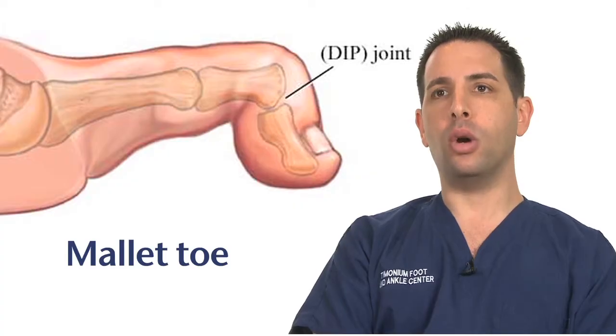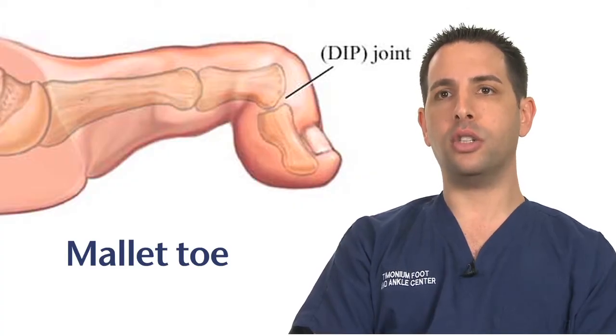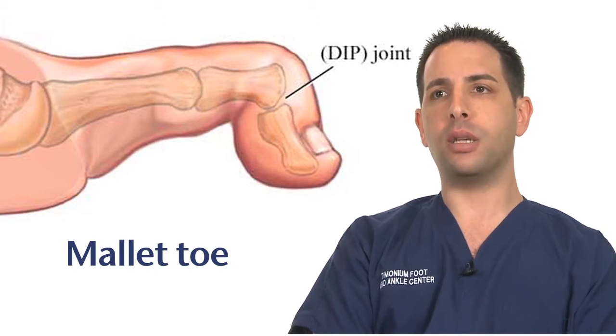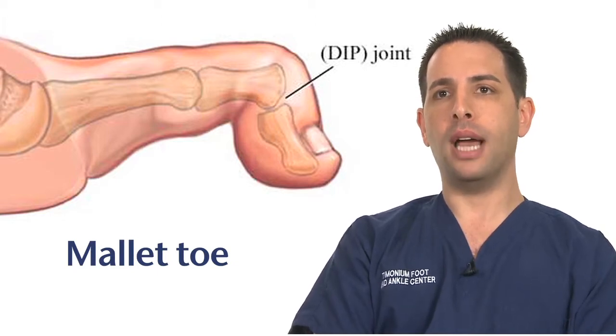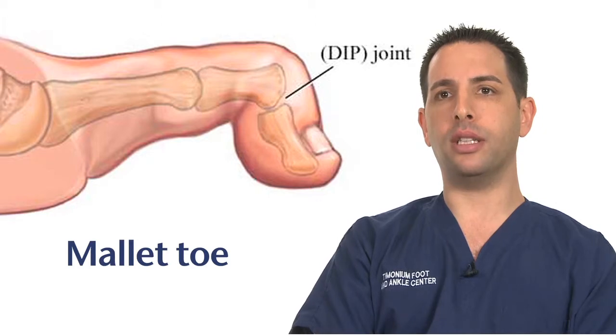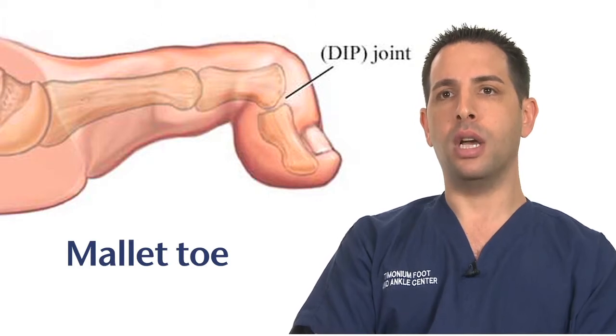A mallet toe results when there is a flexion contracture at the distal interphalangeal joint. This leads to prominent bone at the top of this joint and can also lead to pressure at the tip of the toe.